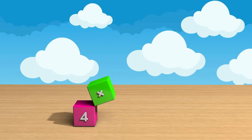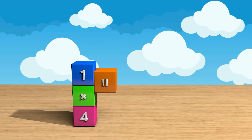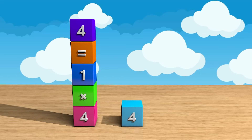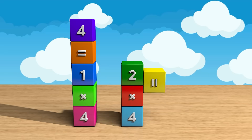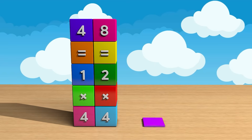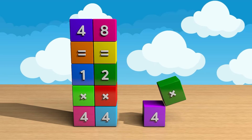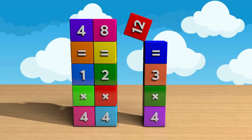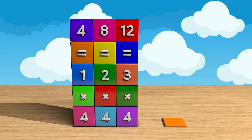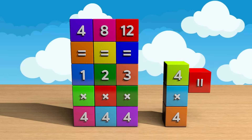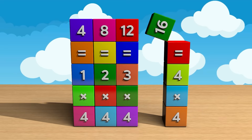Four times one equals four. Four times two equals eight. Four times three equals twelve. Four times four equals sixteen.